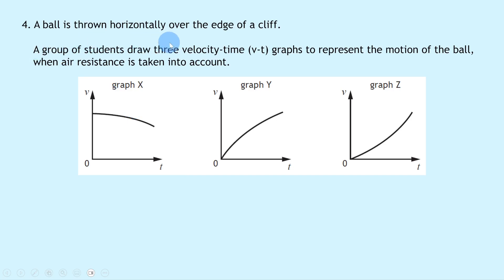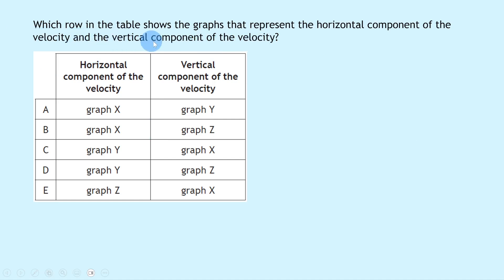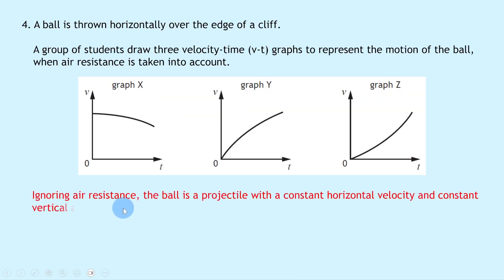Question 4 says a ball is thrown horizontally over the edge of a cliff. A group of students draw three velocity-time graphs X, Y and Z to represent the motion of the ball when air resistance is taken into account. The question asks which graphs represent the horizontal and vertical components of velocity. Ignoring air resistance, the ball has constant horizontal velocity and constant vertical acceleration, but taking air resistance into account we deal with curves rather than straight lines.